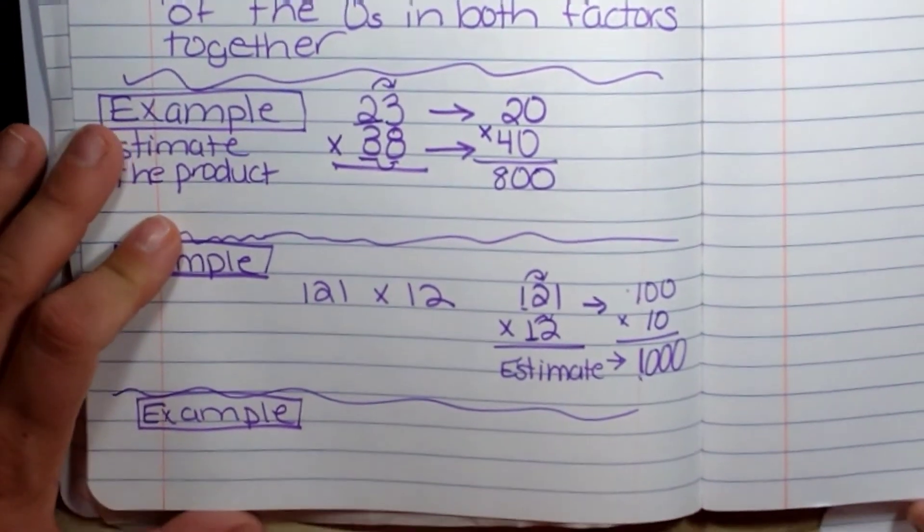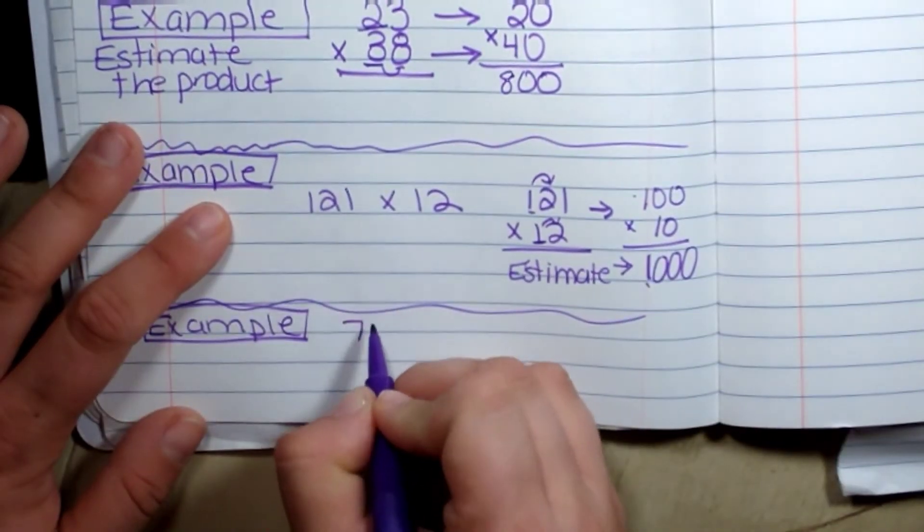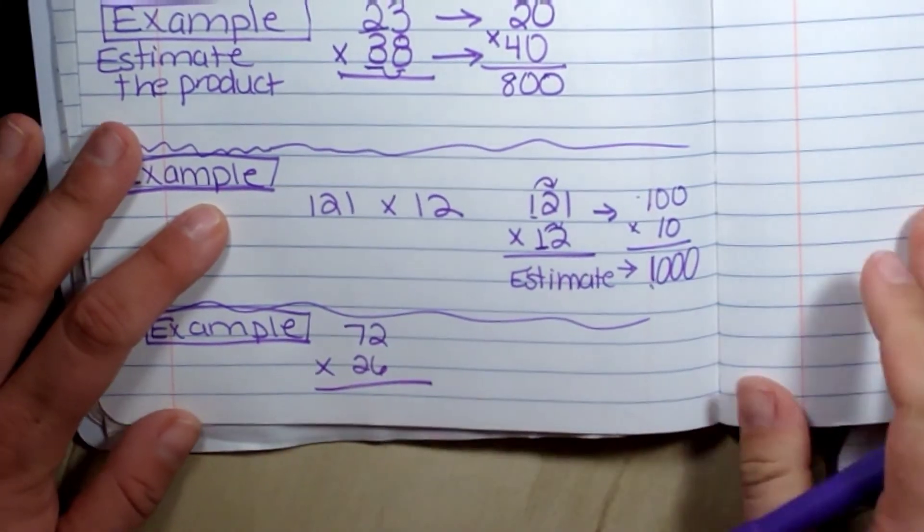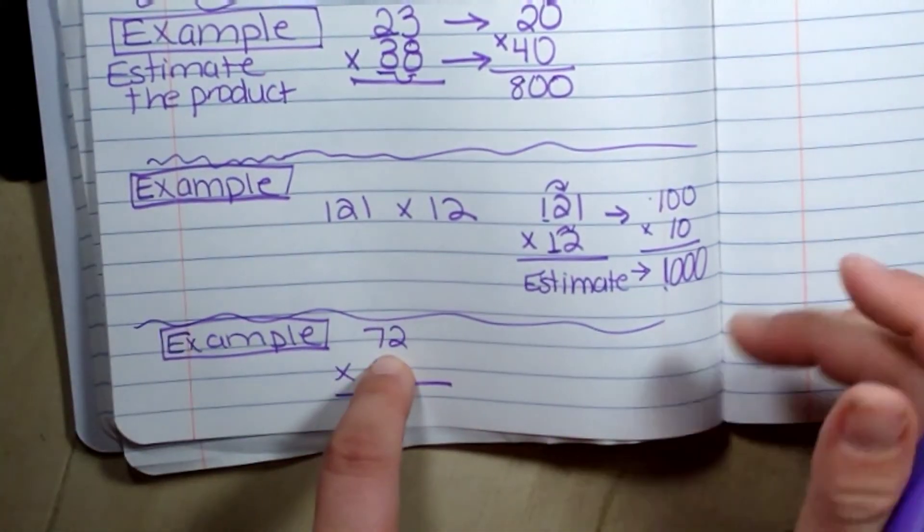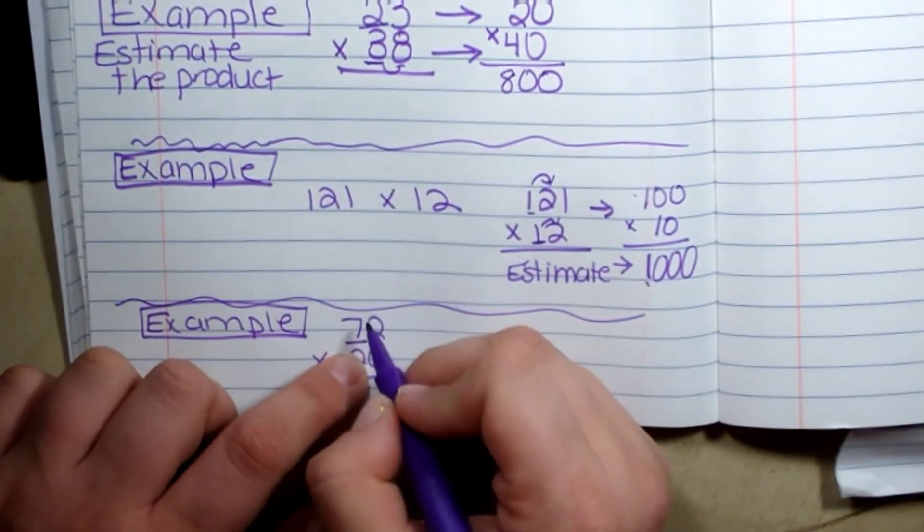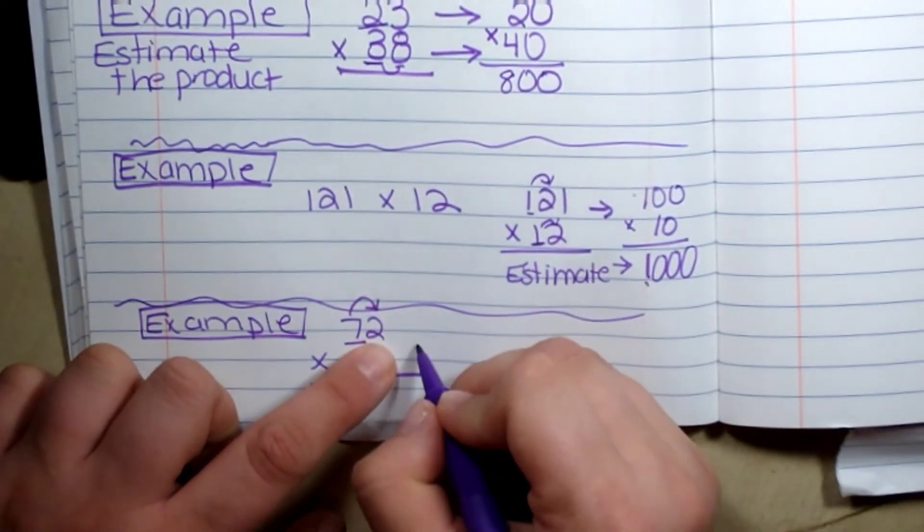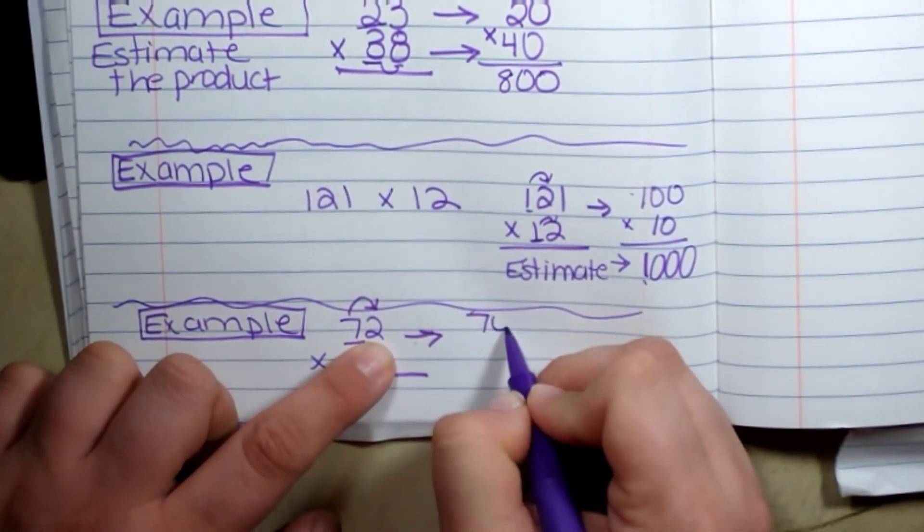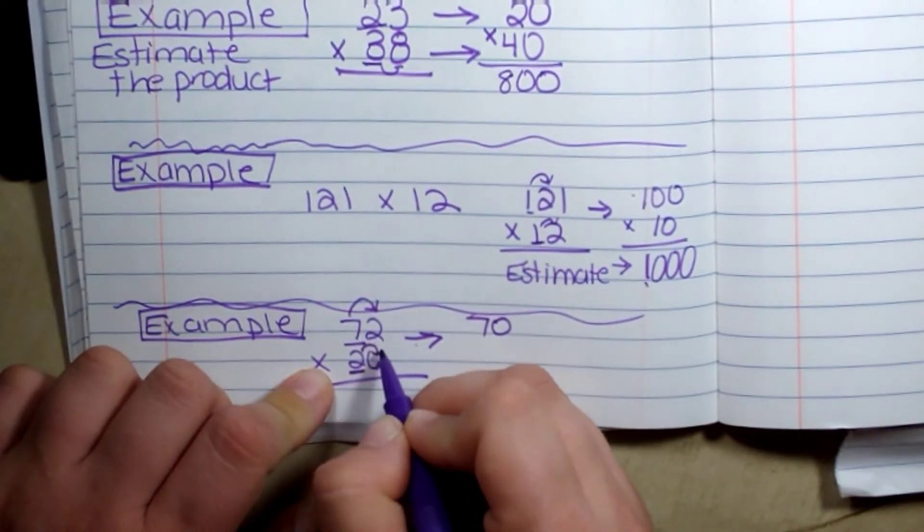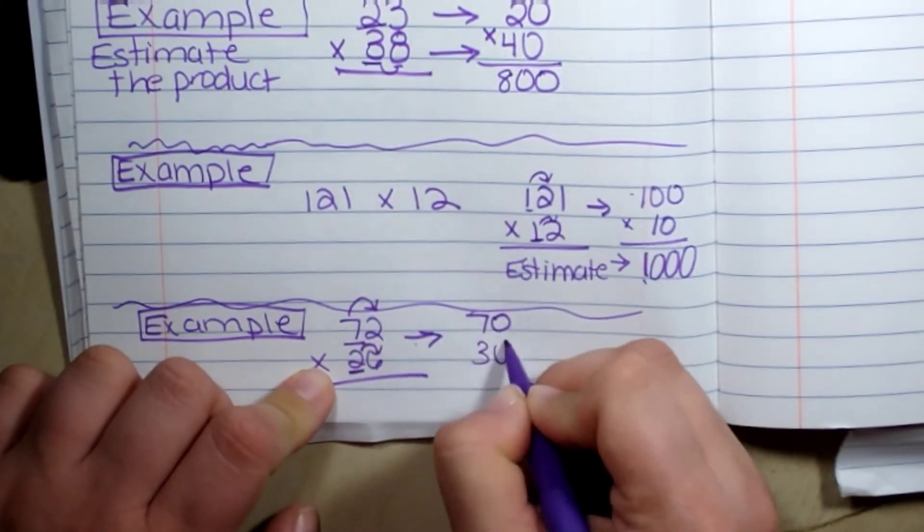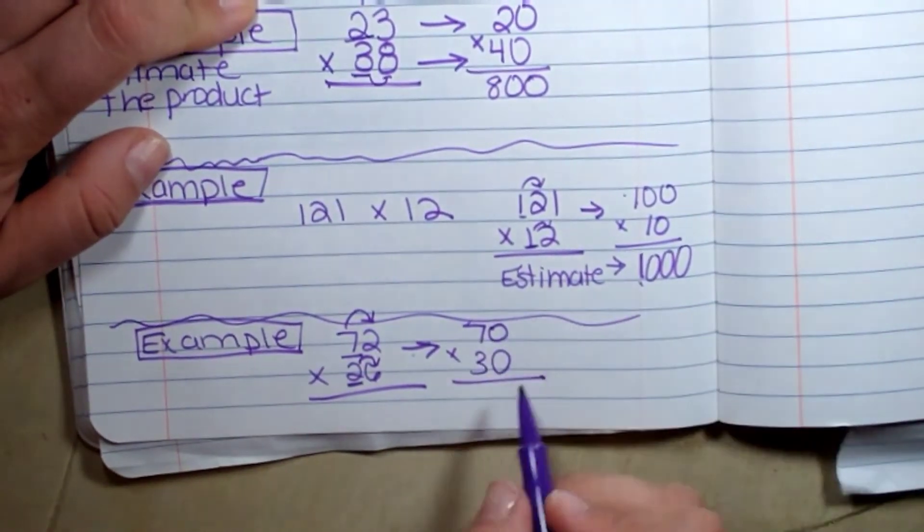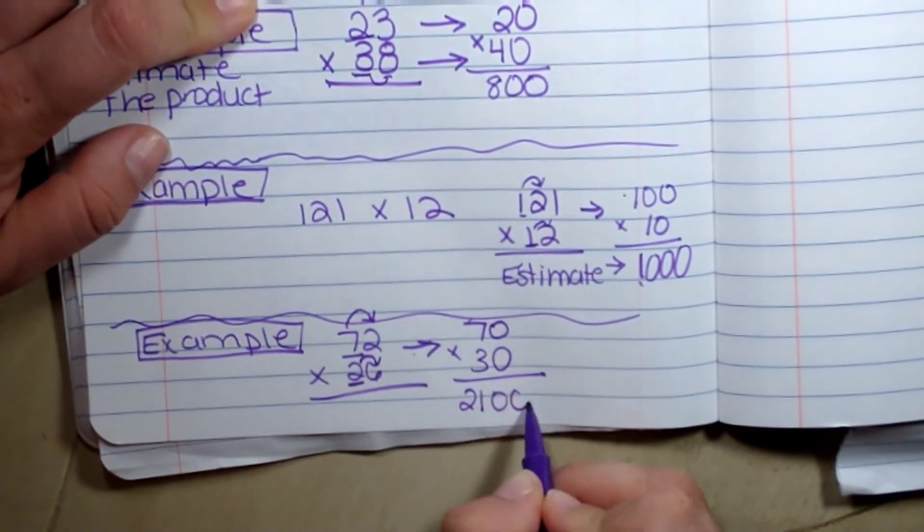We are going to estimate the product. Remember when we estimate, we're finding about. I have 72 times 26. My largest place value to the left on the top one is seven, which is tens. So seven next door, four or less, let it rest. I'm going to do my two here. Five or more, let it soar. I'm going to multiply my non-zero numbers. Seven times three is 21. I have two zeros. So the estimate is 2100.